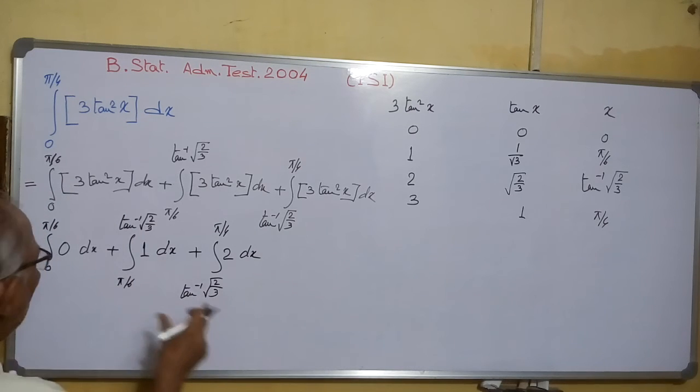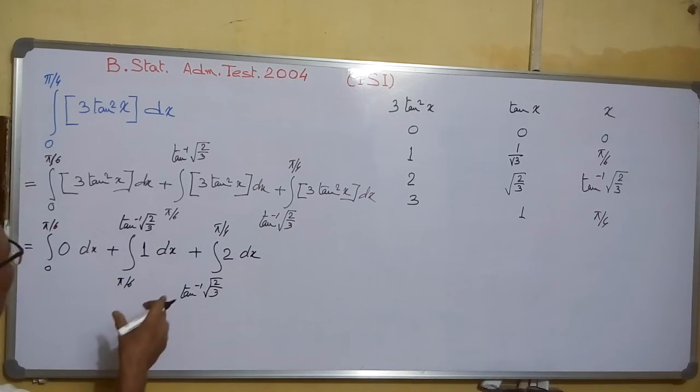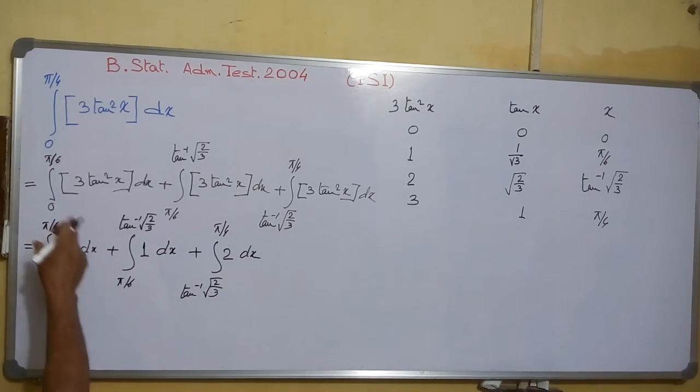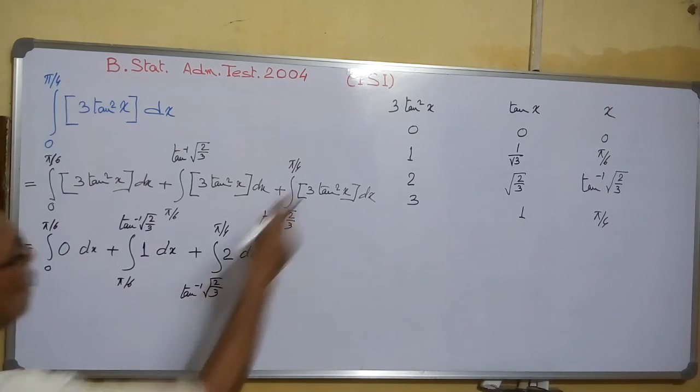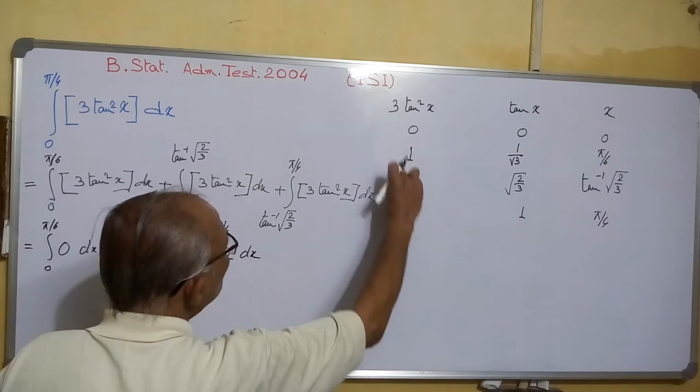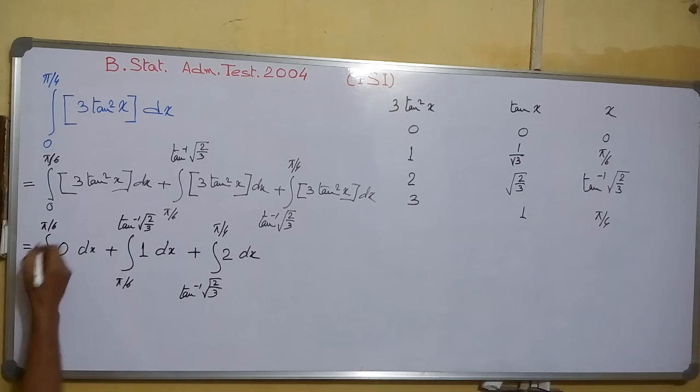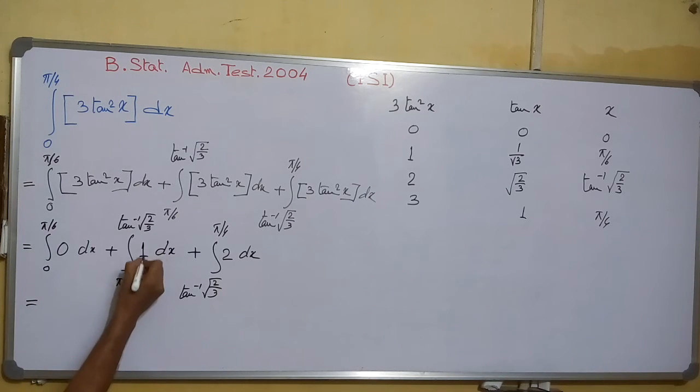So this is how we are breaking these intervals in this way. 0 to 1, 1 to 2, 2 to 3. So now 0 to π/6, it is 0, no need of doing. It is 1, so I integrate with x.